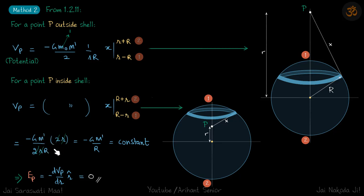If we do that, put those values and solve, we'll get the potential inside is minus G m dash by R, which comes to be a constant. So the potential is constant. We know that field is minus dV by dr, which comes to be zero.